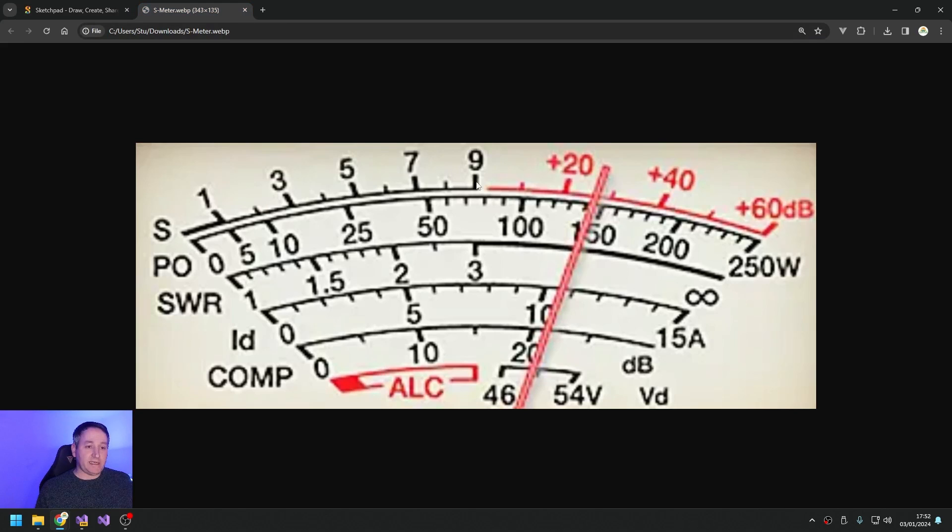So what that means is, if you didn't have plus 20, 40, 60, and the scale just went 9, 10, 11, 12, and kept going up, that's what it would actually read rather than plus 20, 40, 60.